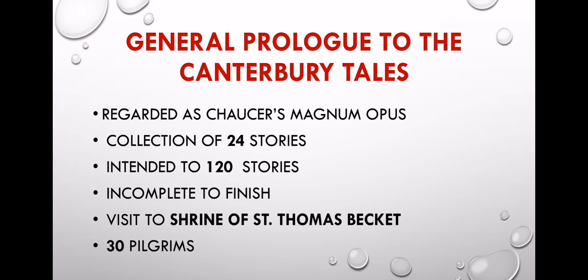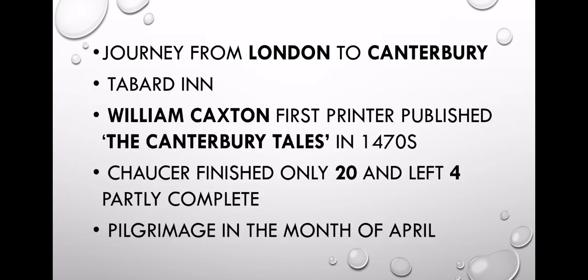The original prologue to the Canterbury Tales involves a visit to the shrine of St. Thomas Becket. There are 30 pilgrims in Chaucer's work, and the journey is from London to Canterbury.